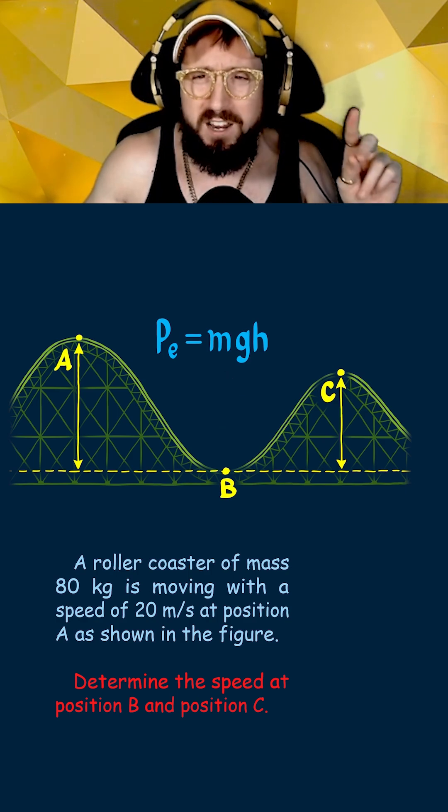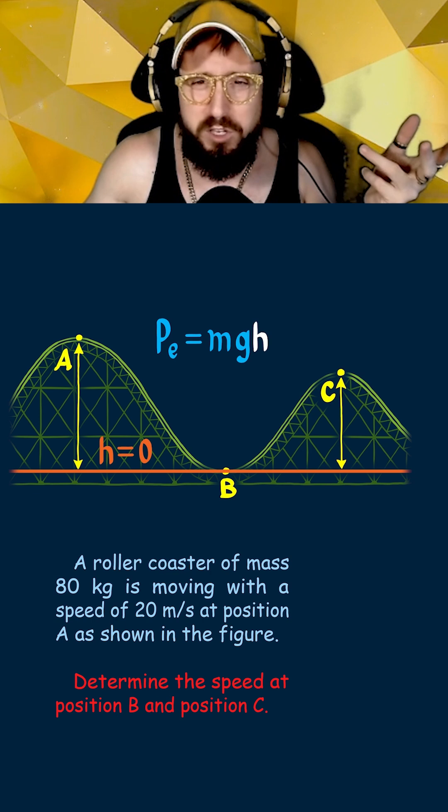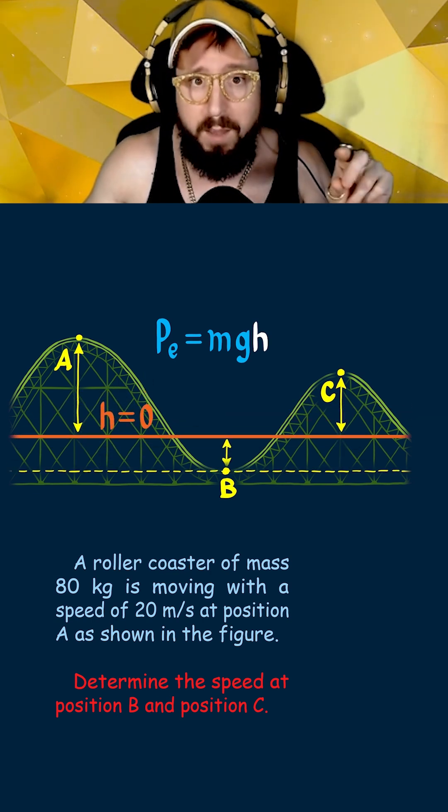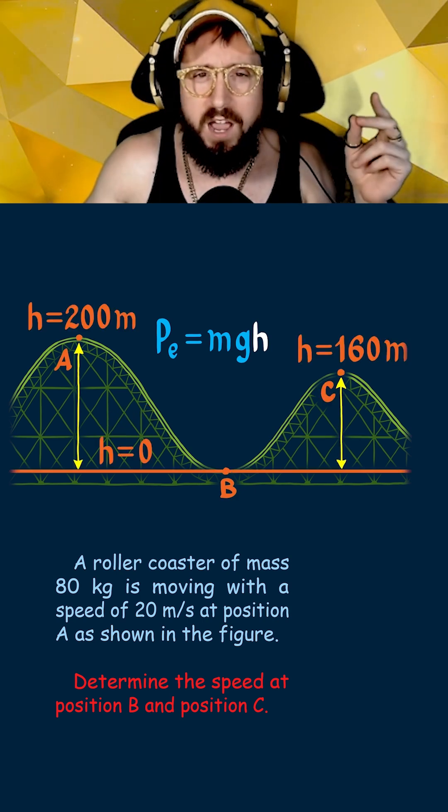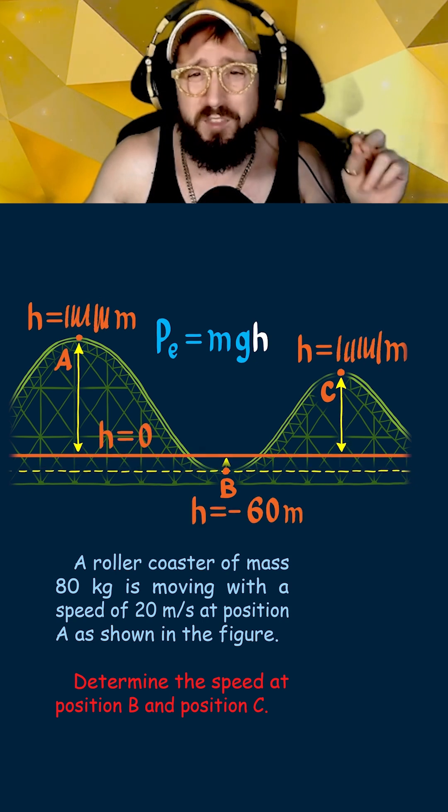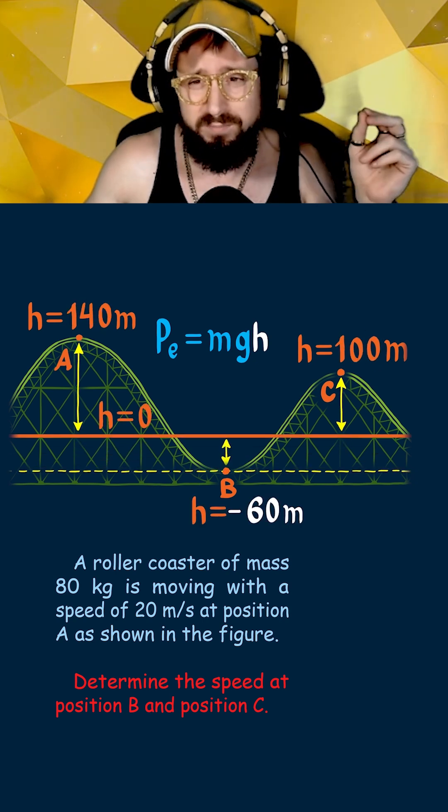Quick note: when putting in a number for the height, you can technically measure it from any spot, as long as you are consistent and measure it from the same spot at both point A and point B. In this case, we're going to measure the height from the ground and call that zero. But you may see other problems where the height is measured from somewhere in the air, and thus height can be negative.